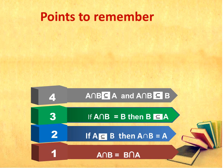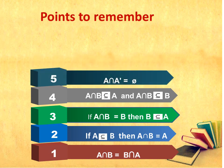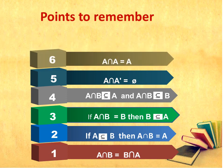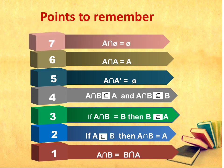Fourth, A intersection B will be a subset of A, and A intersection B will also be a subset of B. Fifth, A intersection the complement of A will always be a null set — the intersection of set A and its complement is definitely a null set. Sixth, A intersection A will always equal A. And the last point, A intersection the null set will again give you a null set.